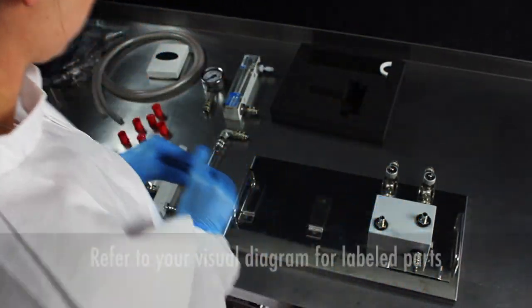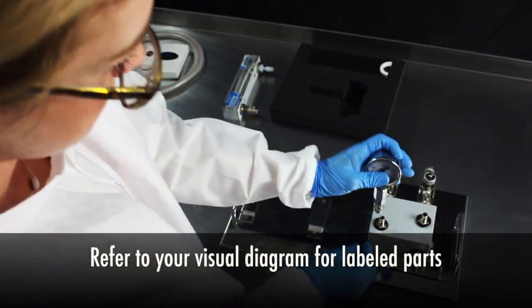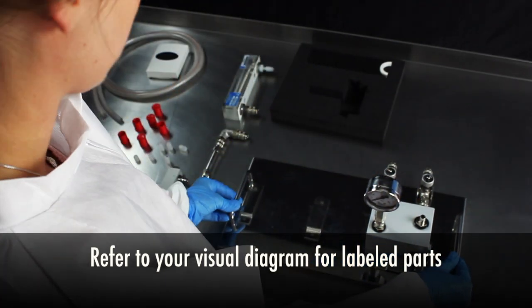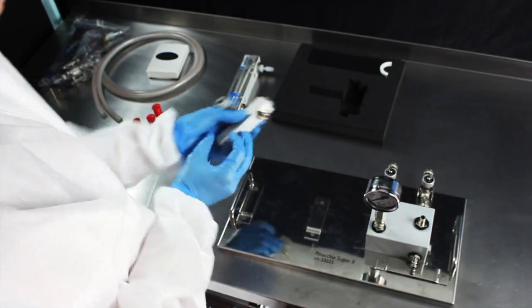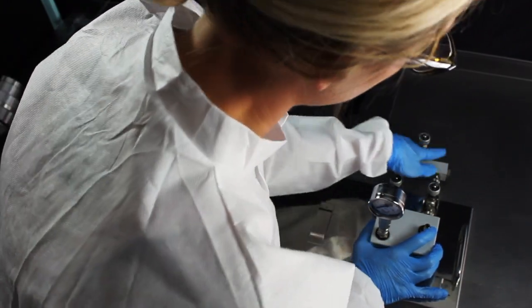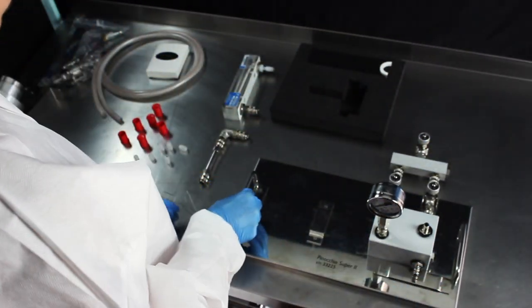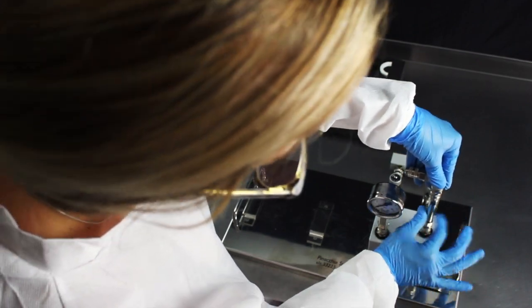Connect the pressure gauge to the top of the central block. Push firmly until you feel it click. Connect the air inlet connection to the back of the central block, then connect the air outlet connection to the top of the central block.